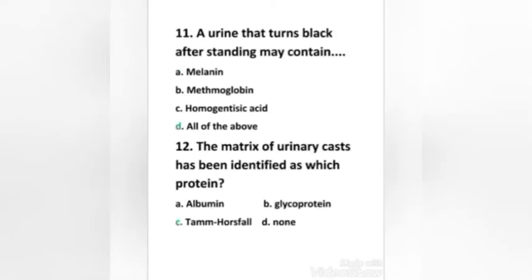Next question: a urine that turns black after standing may contain: melanin, methemoglobin, homogentisic acid, or all of the above. Right answer is option D, all of the above. In all these conditions, urine may turn black after standing for a long time.